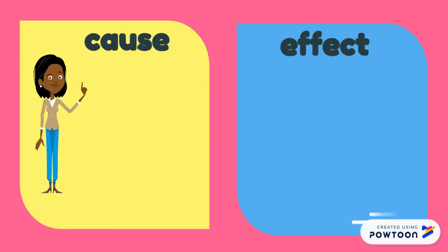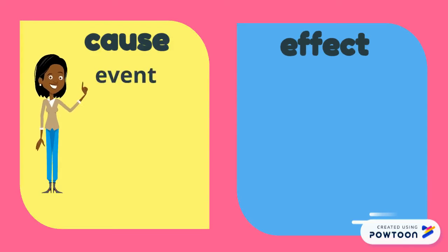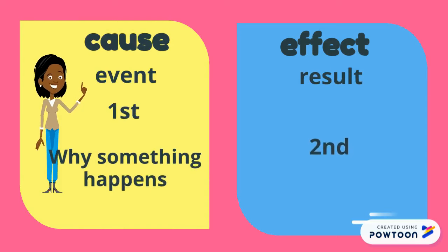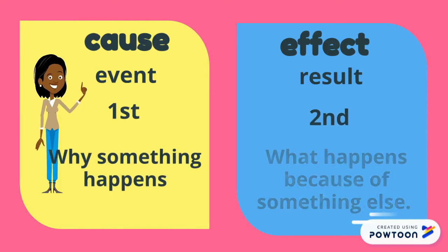So remember: the cause is the event. It tells what happens first and why something is happening. And the effect is the result — it is the second thing that happens, and it happens because of something else.